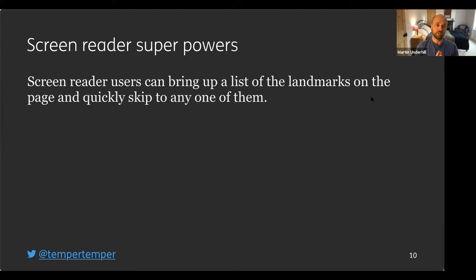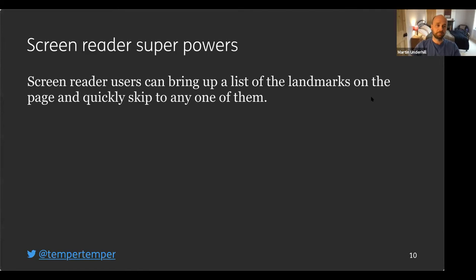Just as sighted users can visually identify those landmarks, screen reader users have superpowers too. They can quickly bring up a list of all the landmarks on the page and jump to any one of them — the same way a sighted user can visually zone in on something they're interested in. For example, if you want the footer to find a Twitter link, a non-sighted user can jump straight to that footer landmark.